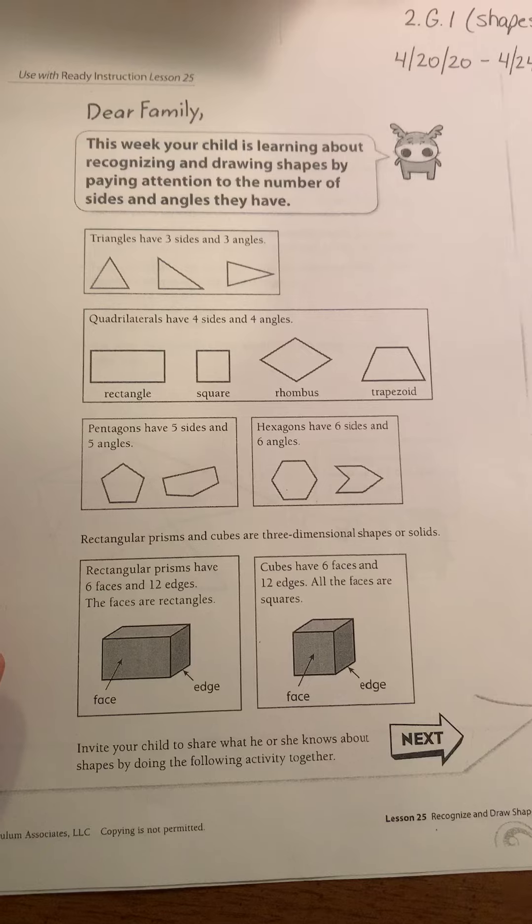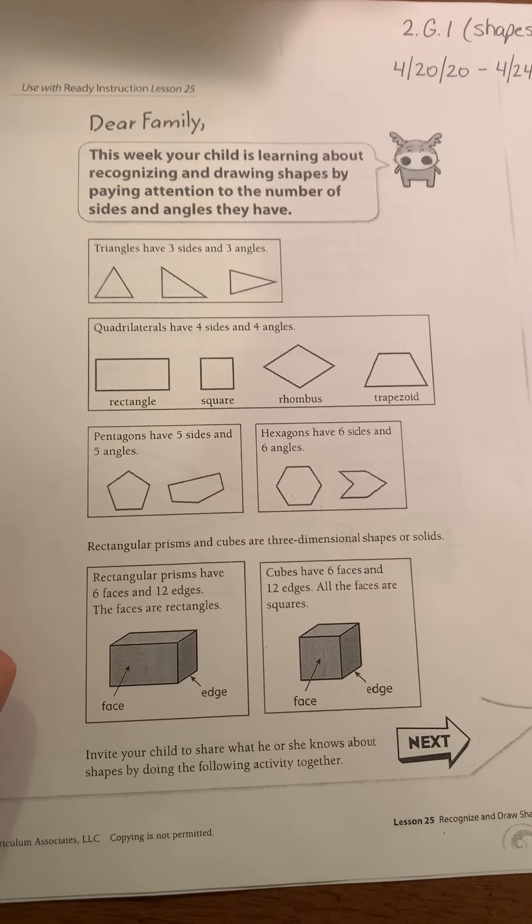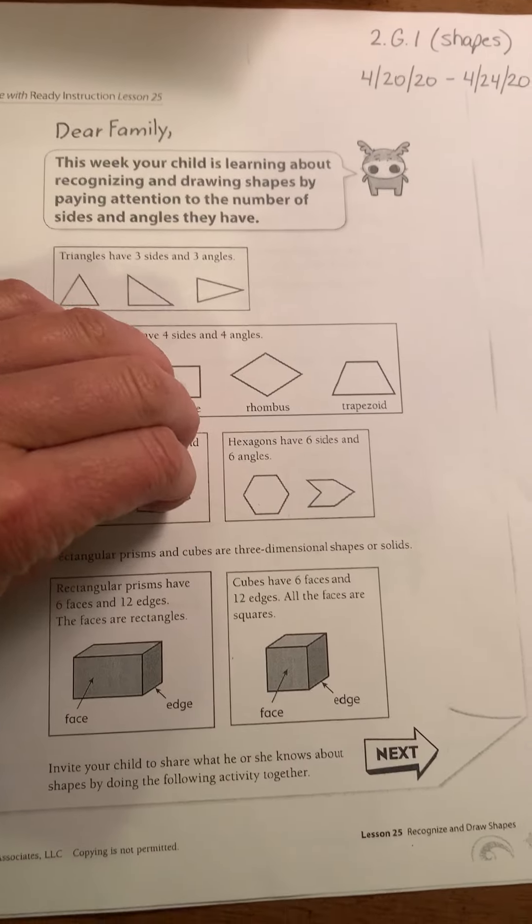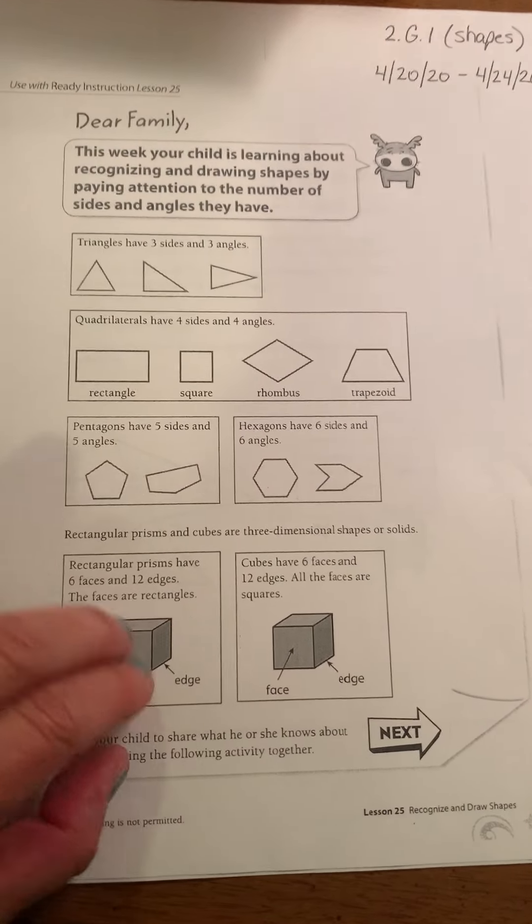There are a few examples of rectangular prisms and cubes at the bottom, our 3D shapes. These are 2D shapes. These are 3D shapes.